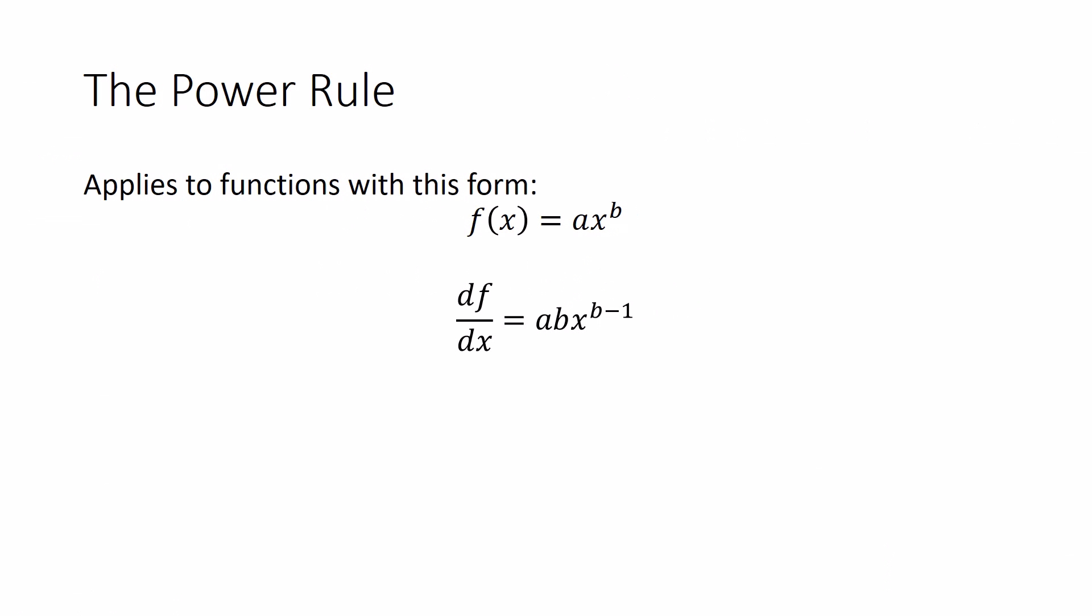So if f is ax to the b, df/dx is abx to the b minus one. Other forms of writing this, df/dx, or your derivative of x, can be called f prime of x, or f sub one of x. It's all the same thing. Note, the power rule is irrelevant when b equals zero. When b equals zero, f(x) is just a, and its derivative will always be zero.